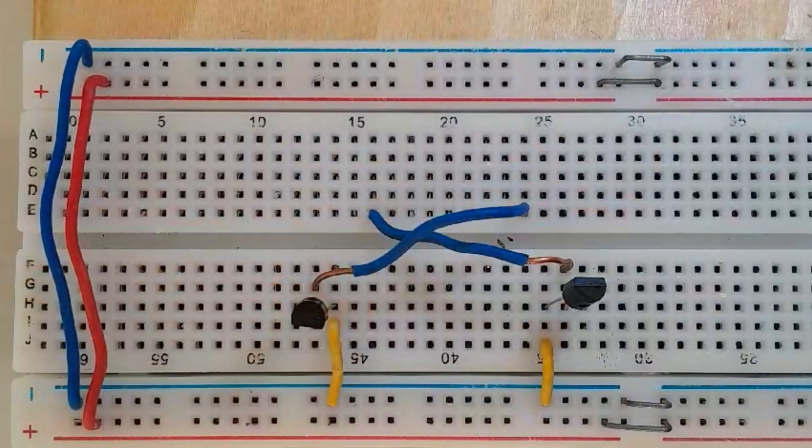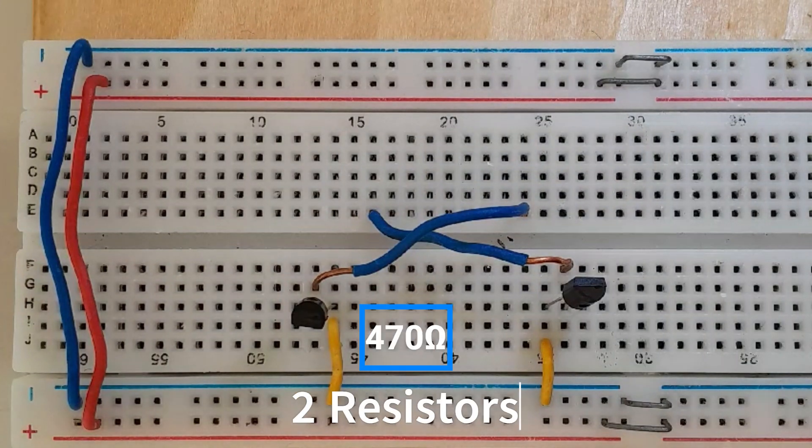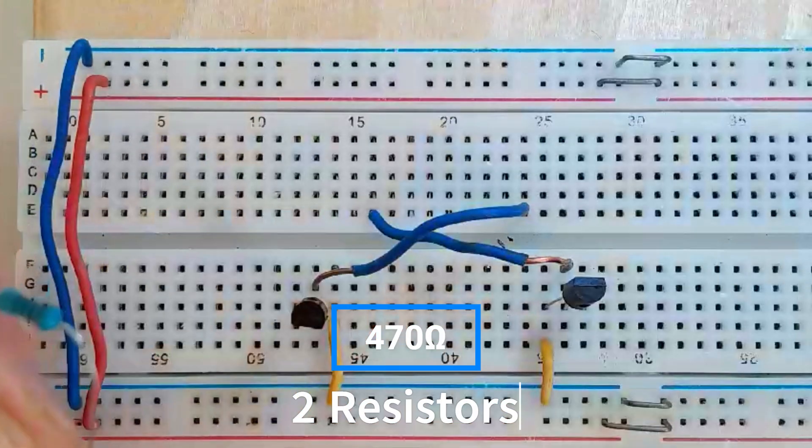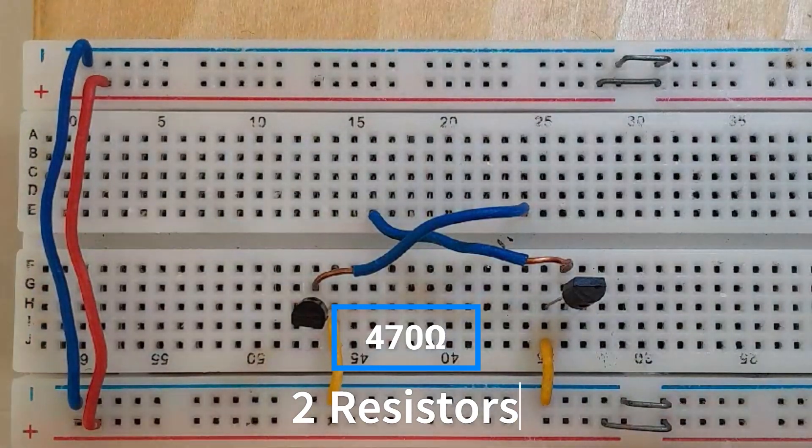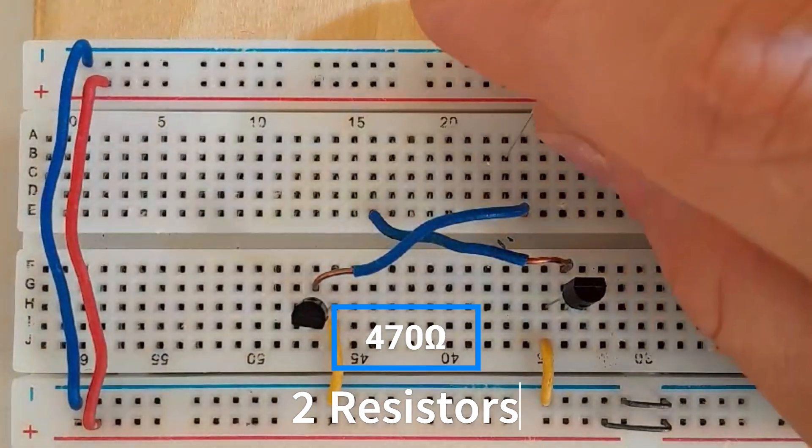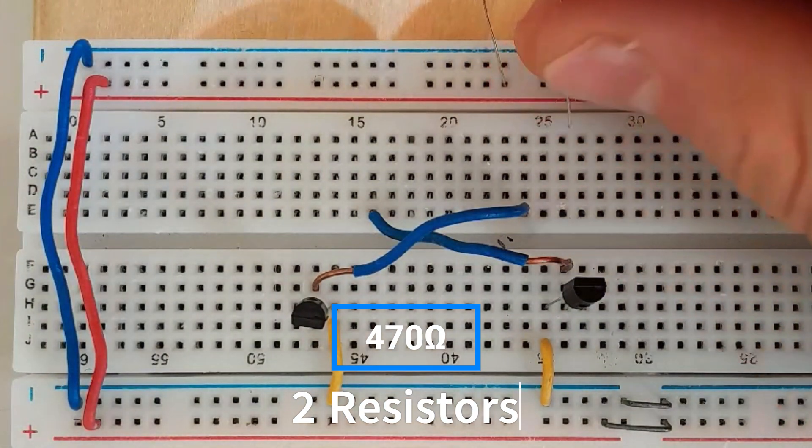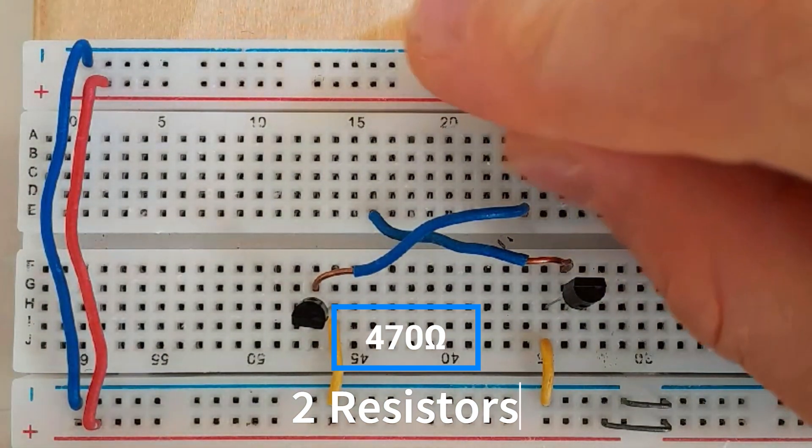Then you need to connect the 470 ohm resistor to VCC or the positive rail and then to this pin. Same thing for the other side.